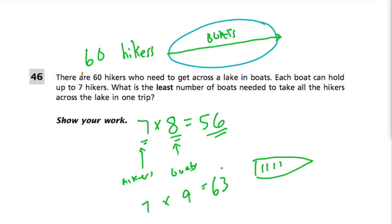Because there are only 60 hikers and we have room for 63, but you'll need 9 boats to get everyone across. So the smallest number of boats we need is 9 to get all 60 hikers across. That's what we're showing here.